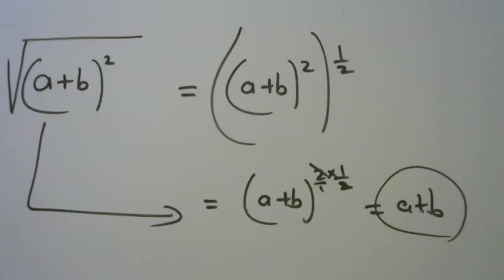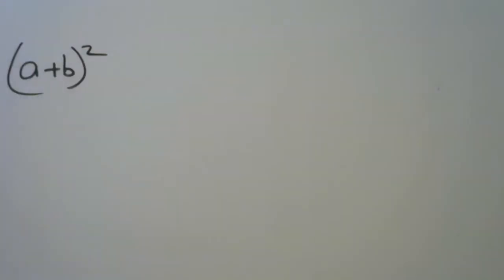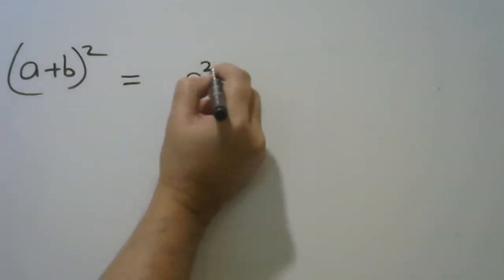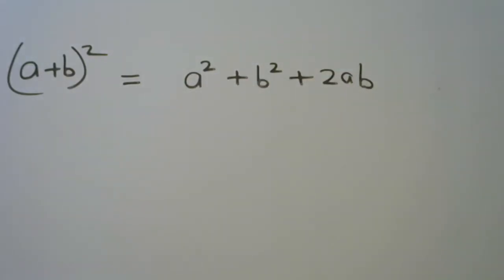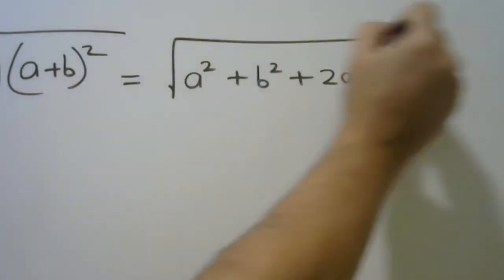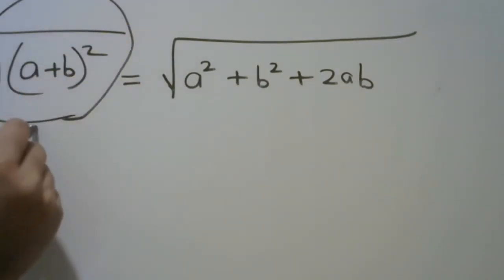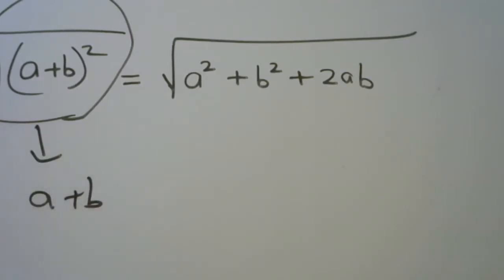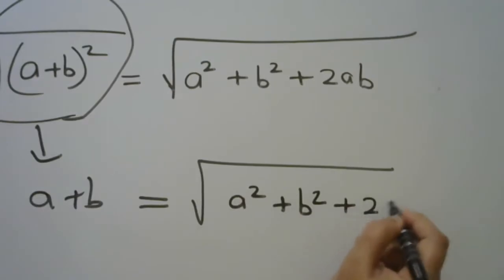You just hold that idea — the same a plus b can be expressed in a different format. You know a plus b all squared is the same as a squared plus b squared plus 2ab. So if I put the square root sign on both sides, they're still equal. And I know that the left side is equivalent to a plus b. So that means a plus b is the same as the square root of a squared plus b squared plus 2ab.